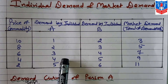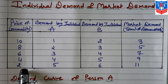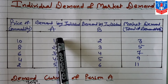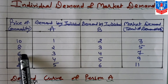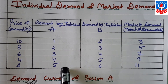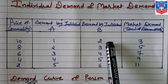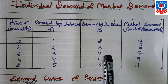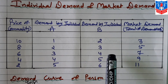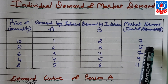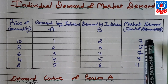This is illustrated with a schedule. The price of a commodity is shown at different levels — 10, 8, 6, 4, 2 — and the demand by individual consumer A follows the law of demand: at price 10, demand is 1 unit; at price 8, demand increases to 2; at price 6, demand is 3, and so on. Similarly, consumer B's demand at the same prices is recorded. Assuming only two consumers A and B in the market, market demand is their total: 1+2=3, 2+3=5, 3+4=7, and so on.